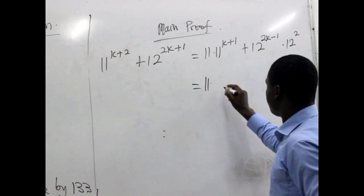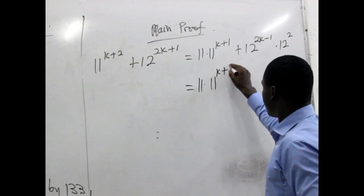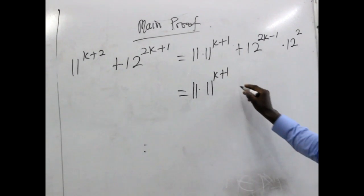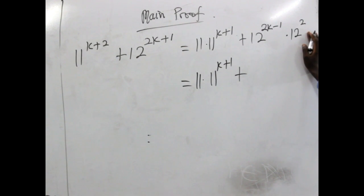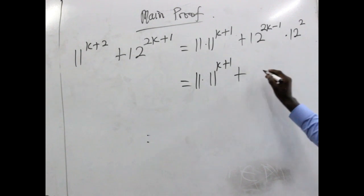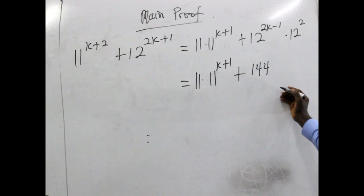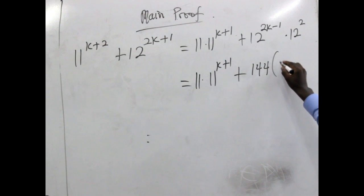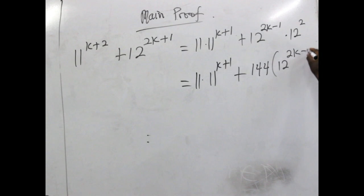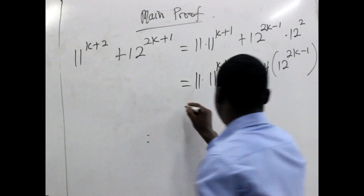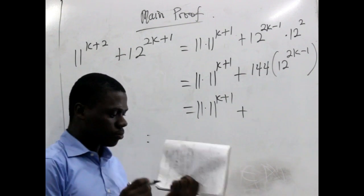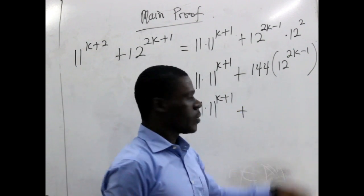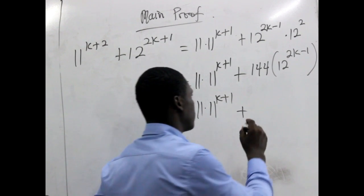So this will be equal to 11 multiplied by 11^(k+1), then plus 12^2 multiplied by 12^(2k-1). Now 12 raised to the power 2, or 12 squared, gives us 144. So we have 11 multiplied by 11^(k+1), plus 144 multiplied by 12^(2k-1).